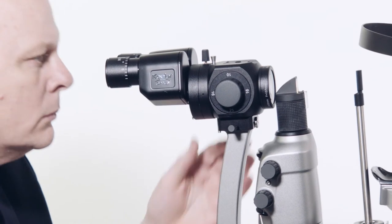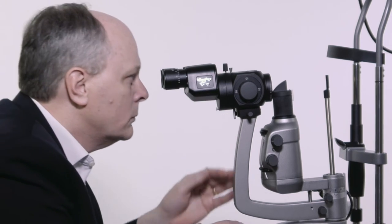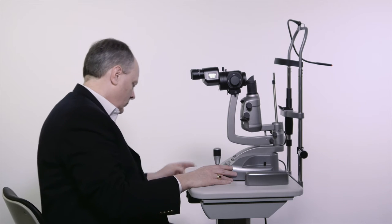The yellow filter can be inserted and displaced by using this plunger. When the examination is complete, set the rheostat low and switch off the slit lamp.